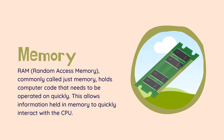Random access memory, commonly called just memory, holds computer code that needs to be operated on quickly. This allows information held in memory to quickly interact with the CPU. The amount of RAM available is limited and therefore needs to be constantly cleared and refilled.